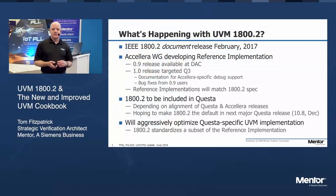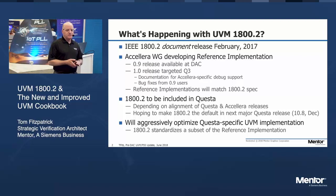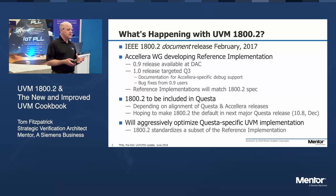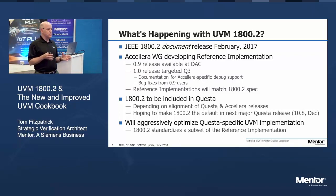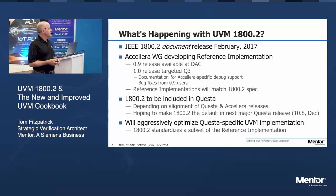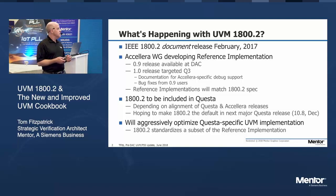So what's happening with UVM 1800.2? Back in February 2017, the IEEE released 1800.2, which is a document that basically documents the class library for UVM. The working group since then has been working on a reference implementation, and they've just released version 0.9 of that reference implementation that matches 1800.2.